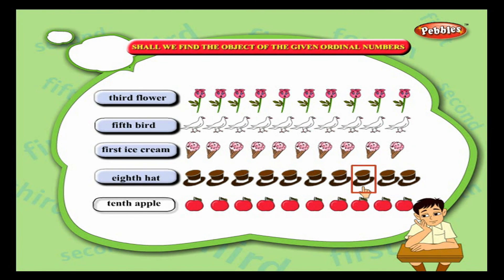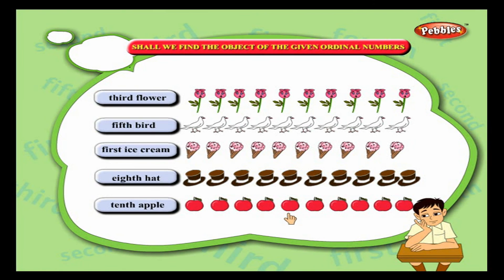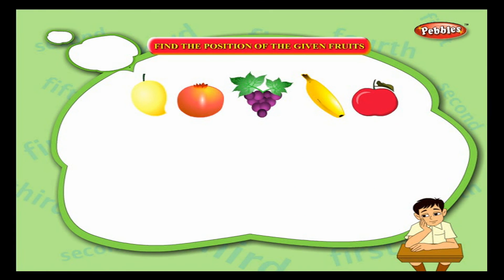Tenth apple: find out the tenth apple. First, second, third, fourth, fifth, sixth, seventh, eighth, ninth, tenth — this is the tenth apple. Now let us find out the position of the given fruits.